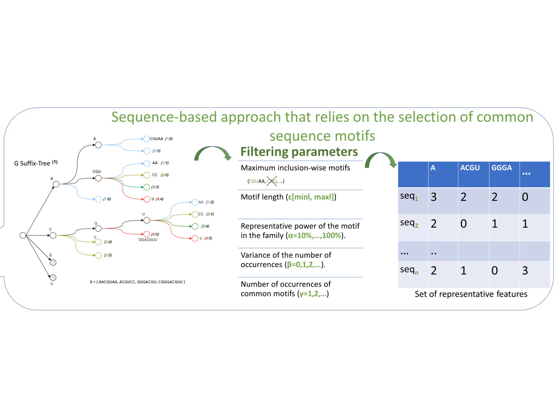In the step of feature computation, we use generalized suffix tree to extract all possible common motifs between all sequences. A common motif is a substring that exists in two or more sequences. For example, ACGU exists in sequences 1, 2, 3, and 4.